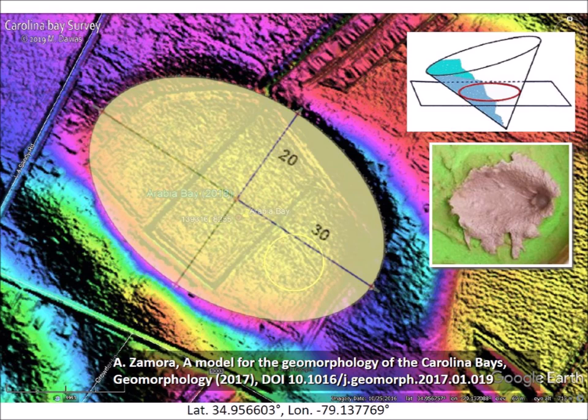The Glacier Ice Impact Hypothesis, published in 2017, proposes that an extraterrestrial impact on the Laurentide Ice Sheet ejected chunks of glacier ice in ballistic trajectories, and that the secondary impacts of the ice chunks liquefied on consolidated ground and created inclined conical cavities that became shallow elliptical bays by viscous relaxation.